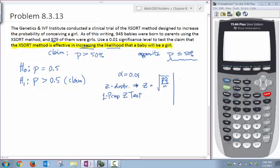So it looks like there are 879 successes. So that will be our X out of a total of 945 babies. So this is our X and our N. Now we can find P hat Q hat and get our test statistic here or we can just punch it into our calculator.